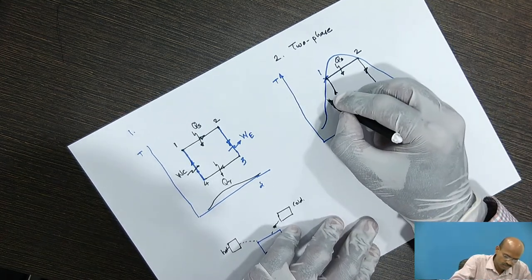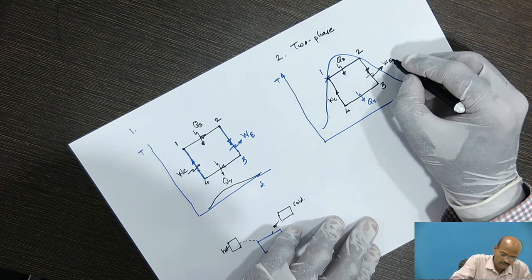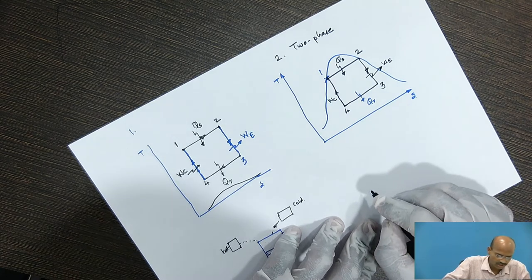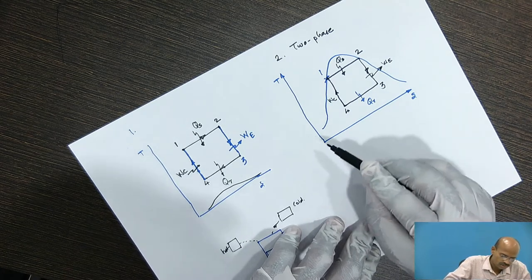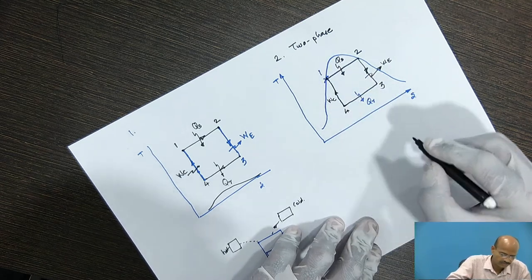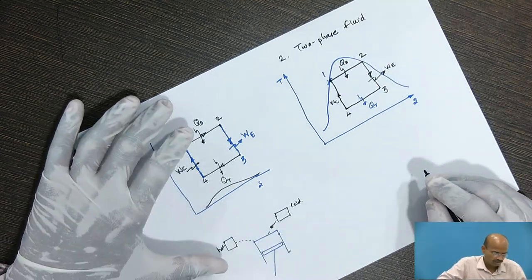So work consumed is WC, work developed is WE. So here we have shown the Carnot cycle for two phase fluid.